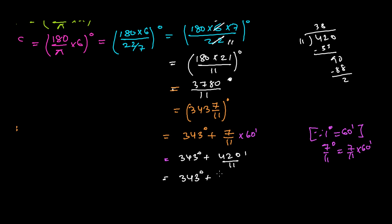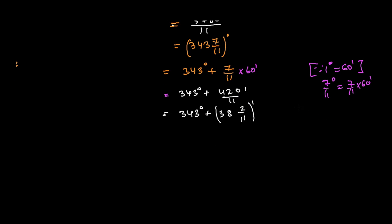So I will get 343 degrees plus 38 whole number 2 by 11 minutes. This can be written as 343 degrees, 38 minutes, plus 2 by 11 minutes.